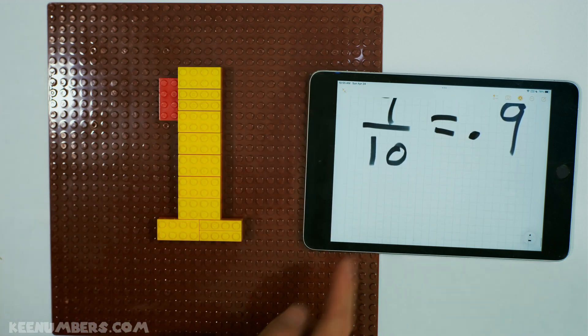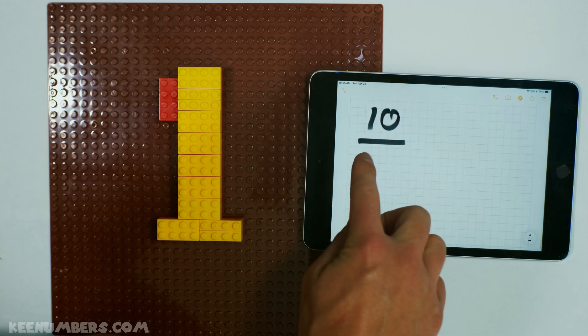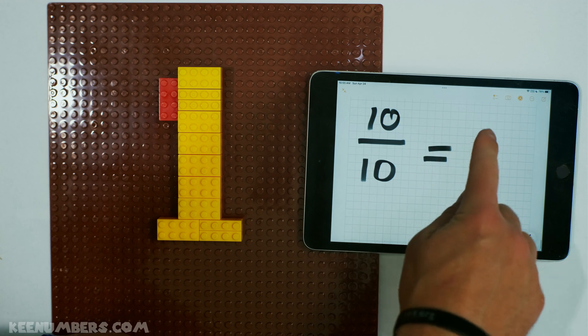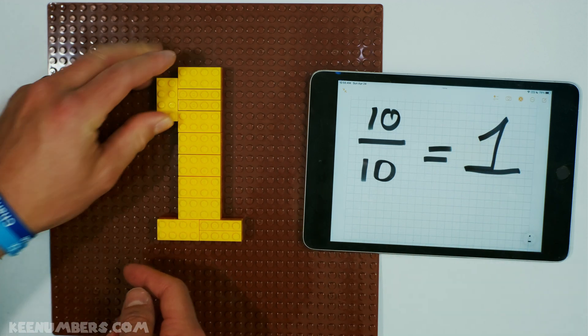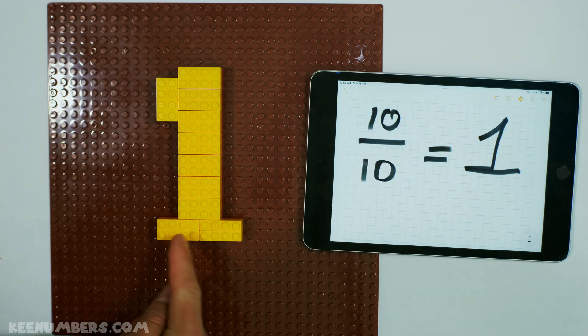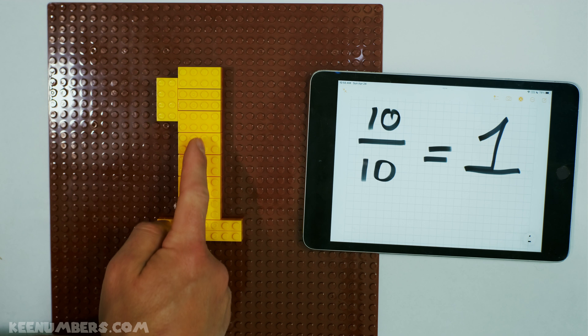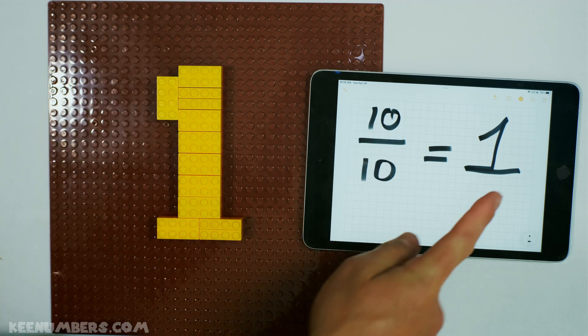And last but not least, if you have 10 tenths, that is 1 whole number. 10 equal parts. 1, 2, 3, 4, 5, 6, 7, 8, 9, 10. We have 10 tenths.